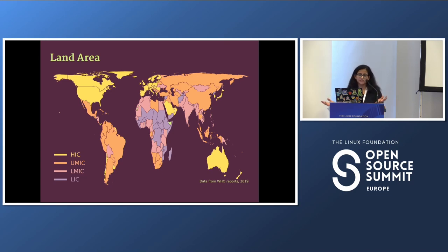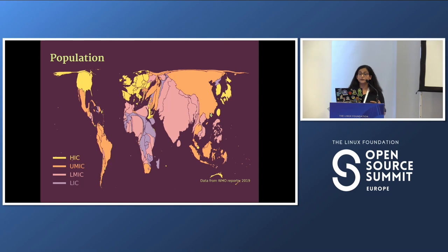This is the world we all know, and there's a large income disparity across the globe, with high-income countries being only a few in number. However, this view becomes skewed when we look at other statistics — for example, population. A large part of our world's population does not reside in these high-income countries; they reside mainly in low-medium or low-income countries.